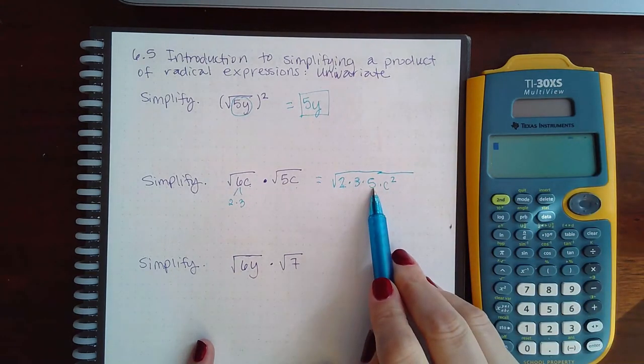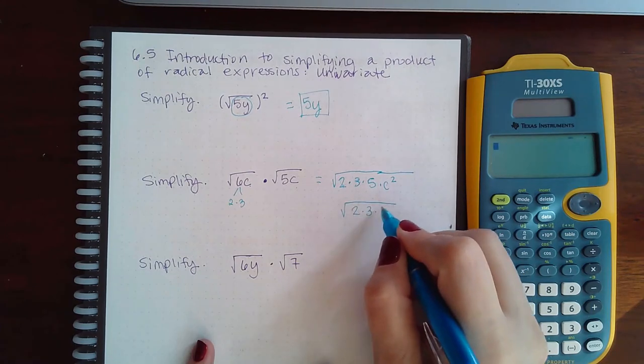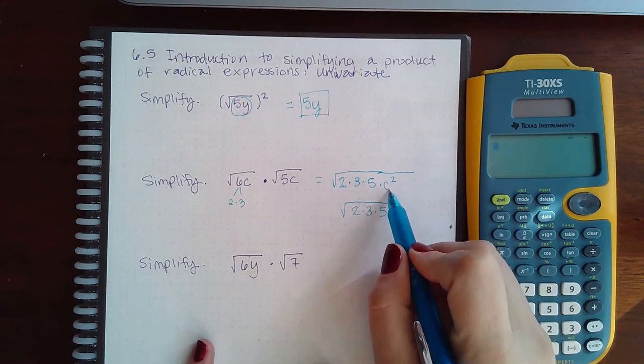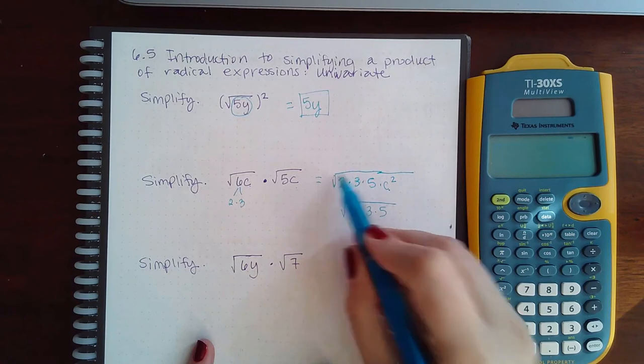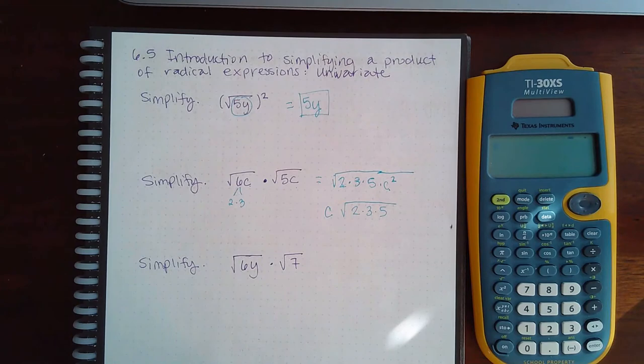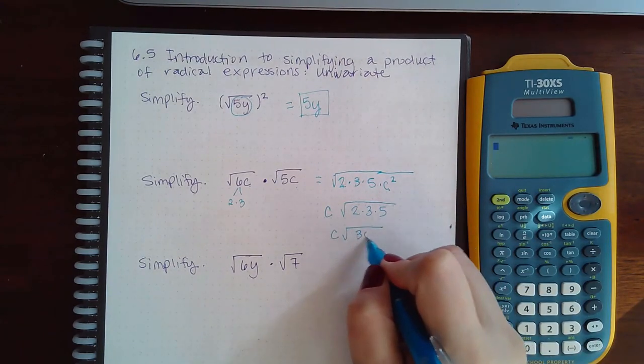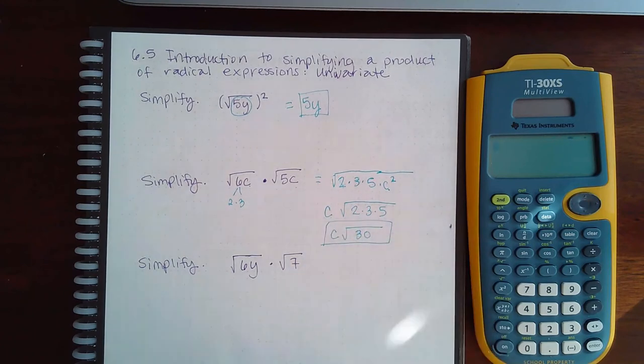Now none of these have a pair, so all of those are going to stay stuck inside of the square root. But this one does have a pair - so the square root will undo this square, leaving me with a c outside. And then if I just multiply all of that together, we end up with c times the square root of 30. Now this I cannot type in my calculator because there are letters involved.